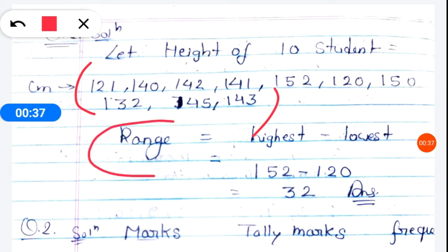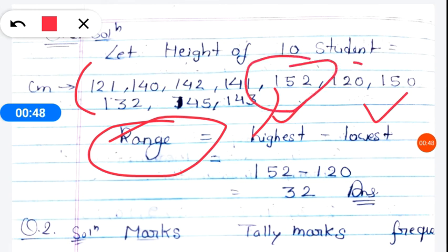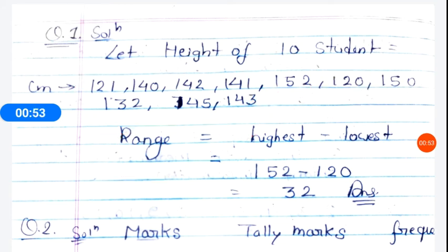We have written the heights of 10 students ourselves. After that we have to find the range. So now how will we find the range? Already I have told you the formula for finding range is highest value minus lowest value. So here what is the highest value we can see? That is 152. And the lowest value is 120. So we will subtract these two, so our answer will be 32.